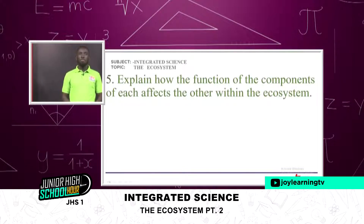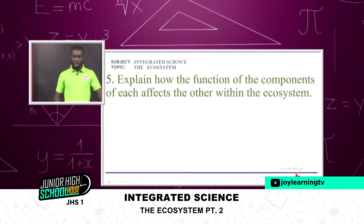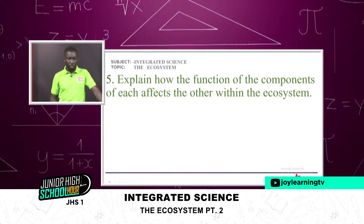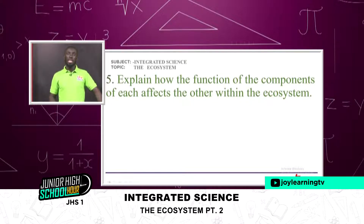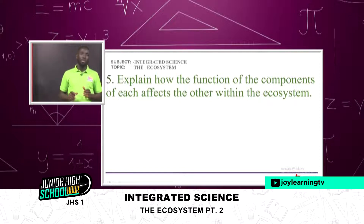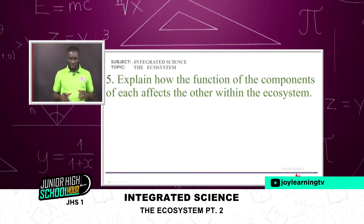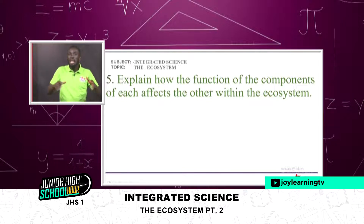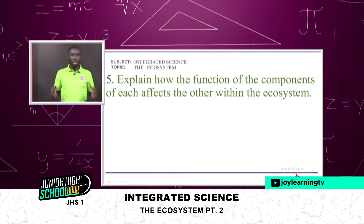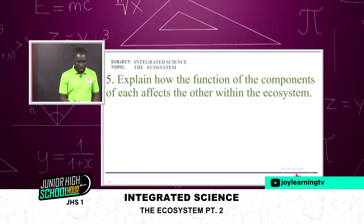Number five: explain how the function of the components of each ecosystem affects the other within the ecosystem — so how do the biotic and abiotic factors affect each other within the same community or ecosystem where they find themselves?